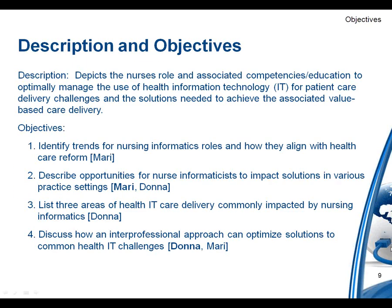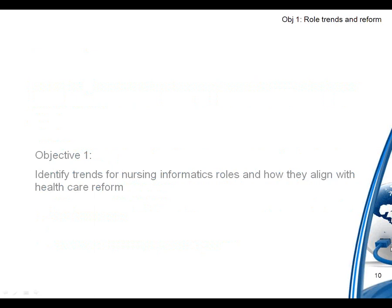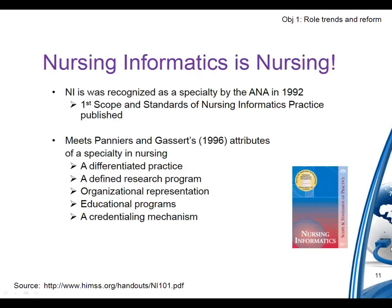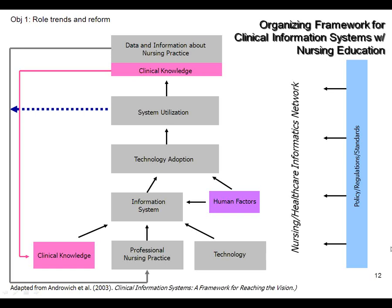Objective one covers the role of the nurse in informatics and how it's affected by healthcare reform. The history of informatics nursing, including the standards and the work by Piniers and Gazert in 1996, differentiated nursing informatics as its own entity. The iterative process starts with professional nursing practice — add technology and you have an information system — but you must account for human factors, adoption, and use. You then gain clinical knowledge and data, and it's an iterative process that ultimately improves patient care delivery.